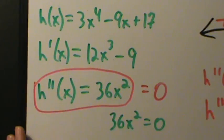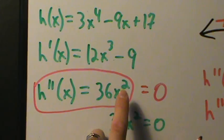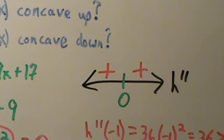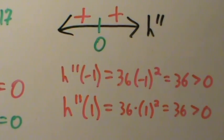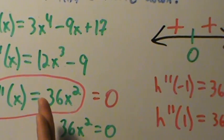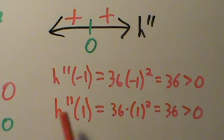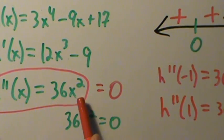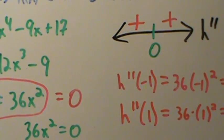You might have noticed that 36x squared is always positive when x isn't zero — it's always a positive number times a positive number. So you can say right away that both intervals are positive. That's totally fine if you can see that shortcut. I just want to show all the details in case you need to show more work. It really depends on your instructor. But if you can see those shortcuts, go ahead and use them.